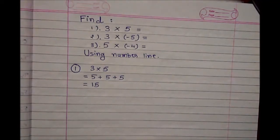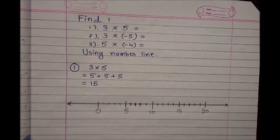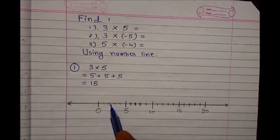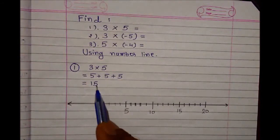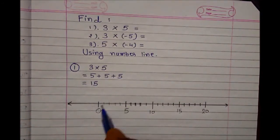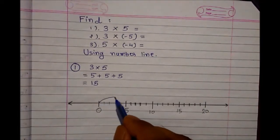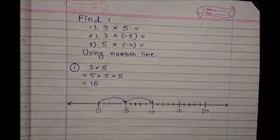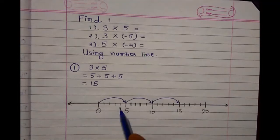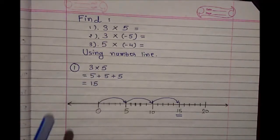Let's represent this with the help of a number line. On the number line we have 0, 1, 2, 3, 4, 5... up to 15 and so on. We take 5 three times: 1 time, 2 times, and 3 times. When we take 5 three times, the answer is 15. So we can represent the multiplication of 2 integers on a number line as well.